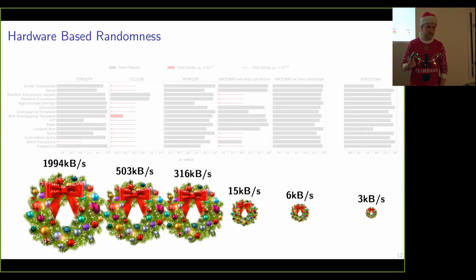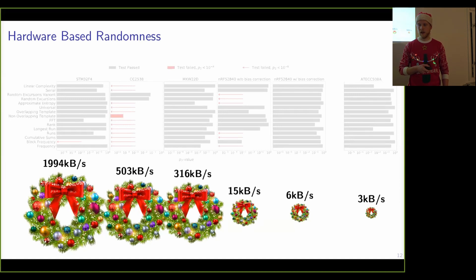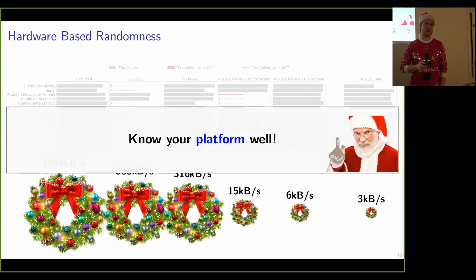We also measured performance — the average throughput of each generator in a stream of random bytes — which also reveals a diverse picture. The performance ranges from 3 kilobytes up to 2,000 kilobytes per second. The fastest is the STM32F platform. The external device is the slowest at 3 kilobytes per second, and the bias correction of the NRF52 costs around a factor of two. Overall, integrating this heterogeneous hardware into an OS is challenging. As a developer, you should know your platform well.